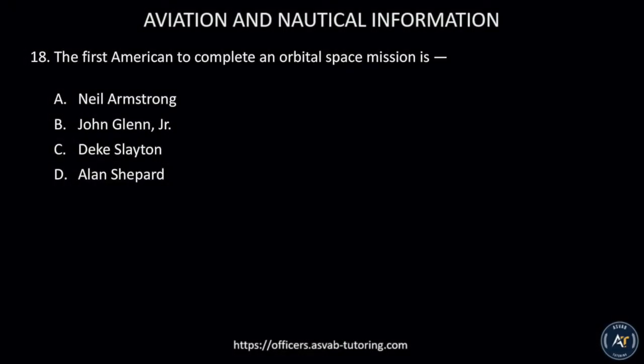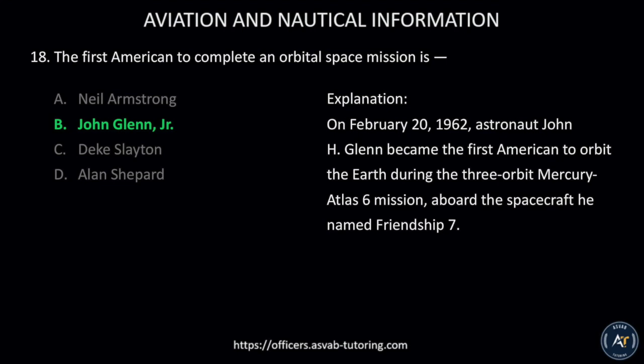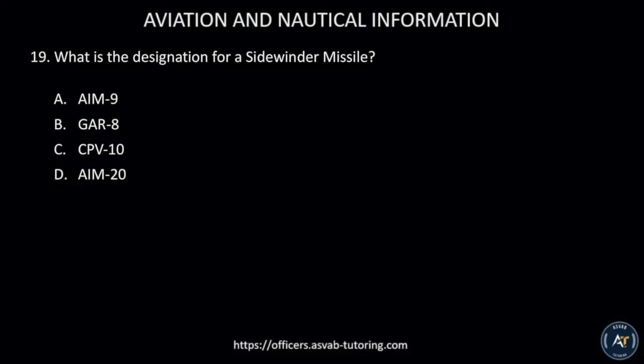Number eighteen: The first American to complete an orbital space mission is A) Neil Armstrong, B) John Glenn Jr., C) Deke Slayton, or D) Alan Shepard. The correct answer is B, John Glenn Jr. On February 20th, 1962, astronaut John H. Glenn became the first American to orbit the Earth during the three-orbit Mercury Atlas 6 mission aboard the spacecraft he named Friendship 7.